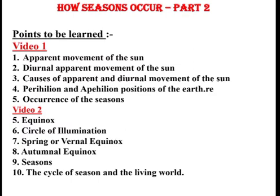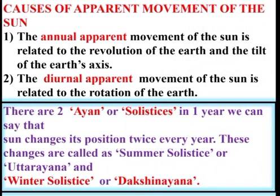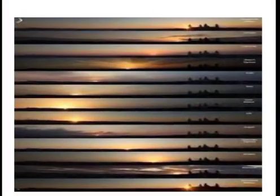Before that, we are going to revise video number 1. We have seen the apparent movement of the Sun, diurnal apparent movement of the Sun, causes of apparent and diurnal movement of the Sun, perihelion and aphelion positions of the earth, and occurrence of the seasons. The annual apparent movement of the Sun is related to the revolution of the earth and the tilt of the earth's axis, and the diurnal apparent movement of the Sun is related to the rotation of the earth. We studied two solstices — summer solstice or Uttar Ayana and winter solstice or Dakshin Ayana.